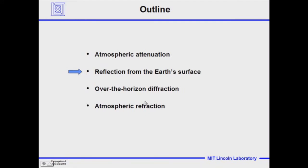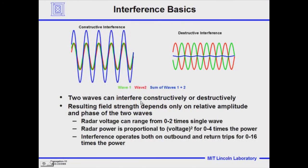Now let's look at reflection from the Earth's surface — that whole issue of reflection from the Earth's surface. We're going to have the interaction of the direct line-of-sight path and a path that bounces off the Earth. Interference between those two paths for the radar beam is important.